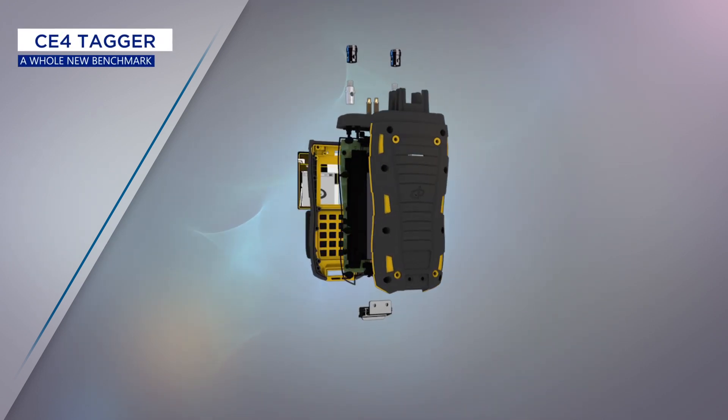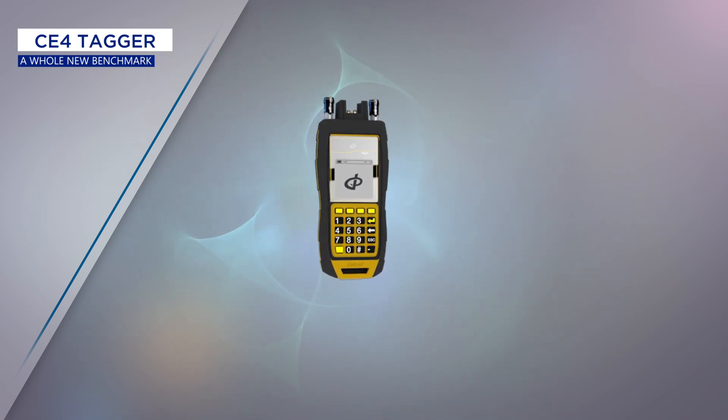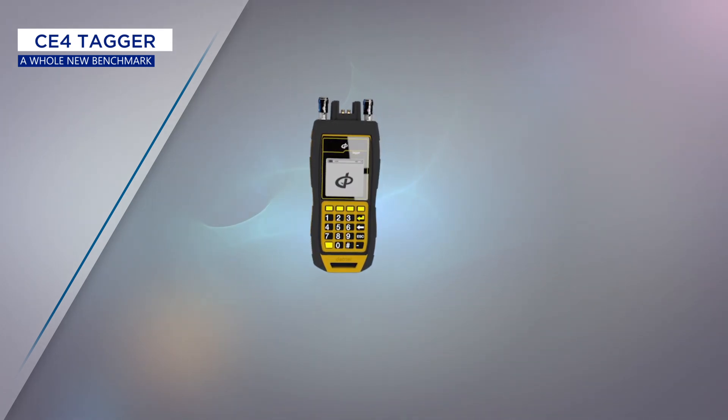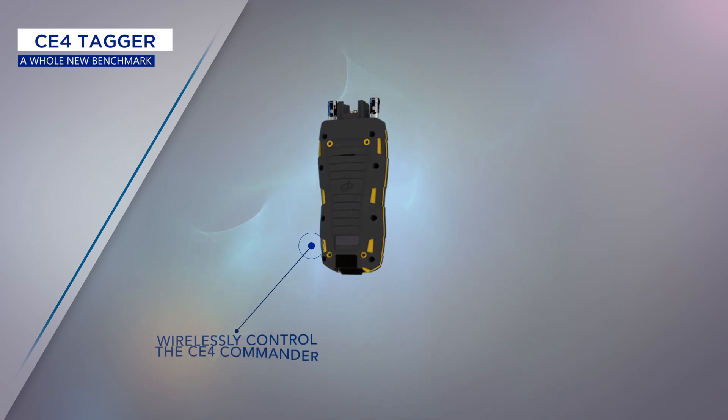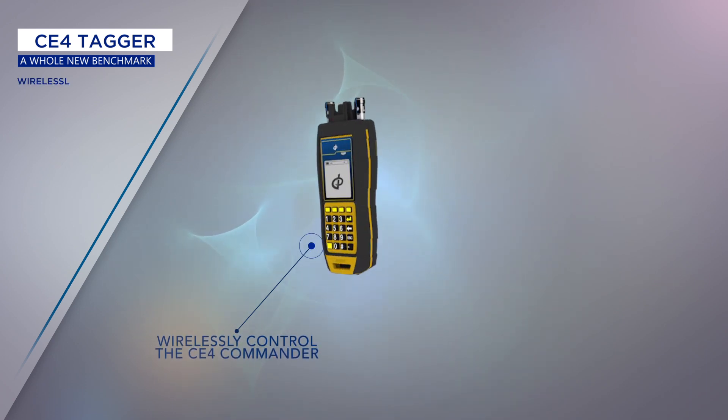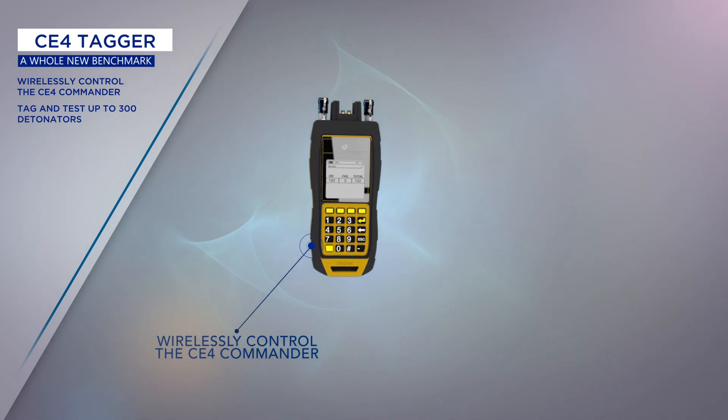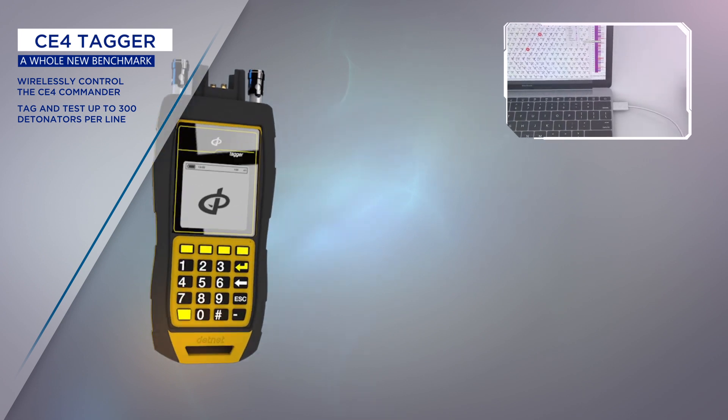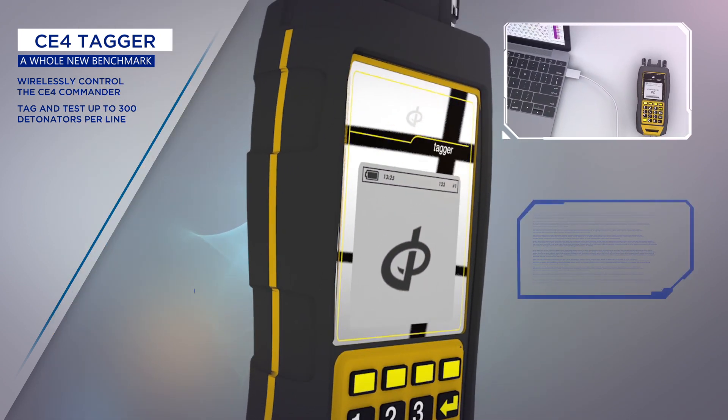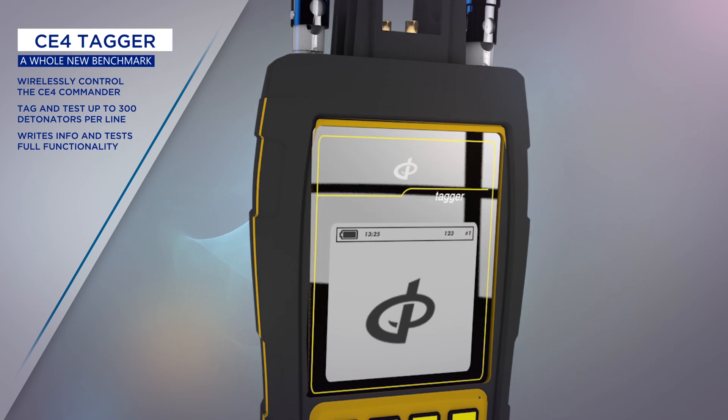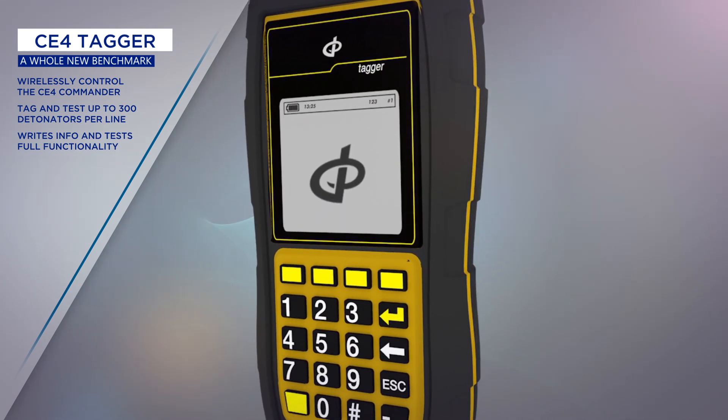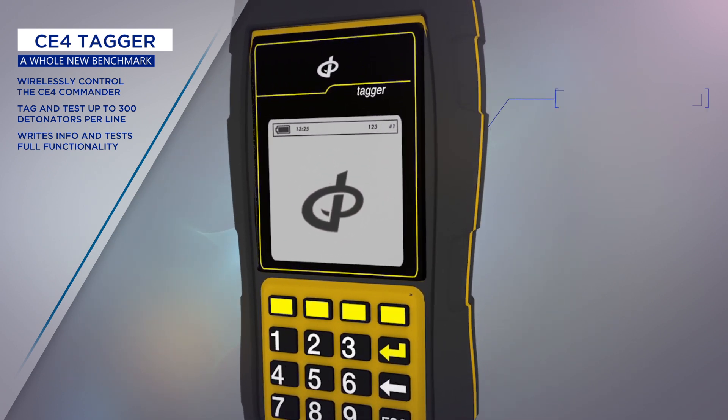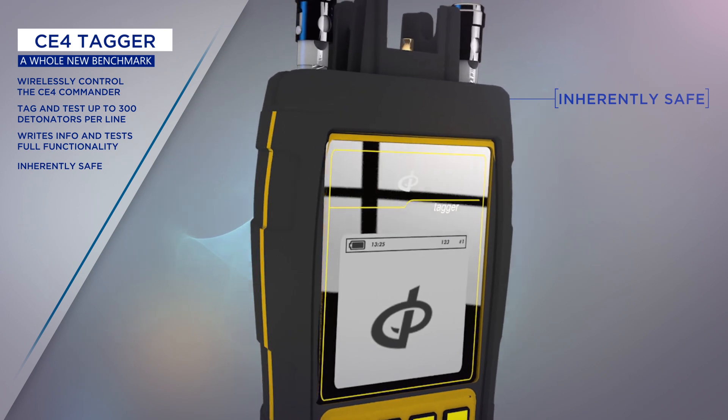The handheld CE4 tagger is a leading innovation from Detnet, and the best of its kind in the industry. It has the functionality to wirelessly control the DigiShot Plus 4G commander, and you now have only one device on the bench that can tag and test up to 300 detonators per line. The ViewShot Plus timing is downloaded via Wi-Fi or USB onto the CE4 tagger. The CE4 tagger writes the delay time and unique ID directly into the detonator whilst testing for full functionality and leakage all at the same time. The CE4 tagger is inherently safe and enables the user to troubleshoot the bench before leaving.